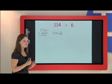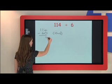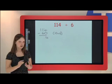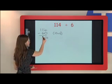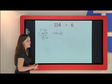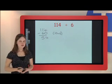Then I do this subtraction. 4 minus 0 is 4. And then 1 minus 6 doesn't go, so I have to do 11 minus 6, which is 5. So I'm left with 54.